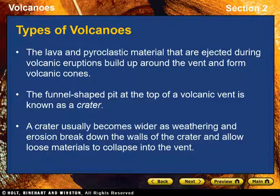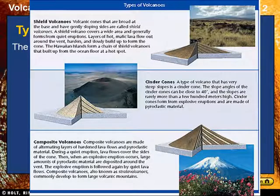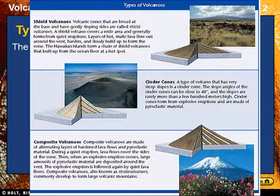Types of Volcanoes. Volcanic activity produces a variety of characteristic features that form during both quiet and explosive eruptions. The lava and pyroclastic material ejected during volcanic eruptions build up around the vent and form volcanic cones. Volcanic cones are classified as three main types, as described in Table 1 on screen. The funnel-shaped pit at the top of a volcanic vent is known as a crater. The crater forms when material is blown out of the volcano by explosions, and usually becomes wider as weathering and erosion break down the walls and allow loose materials to collapse into the vent. Sometimes a small cone forms within a crater when subsequent eruptions cause materials to build up around the vent.